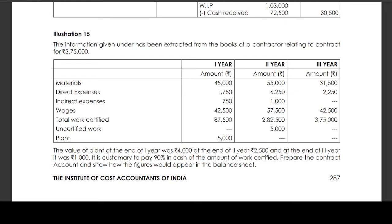For the second year, material is Rs. 55,000, direct expenses Rs. 6,250, indirect expenses Rs. 1,000, wages Rs. 57,500, total work certified is Rs. 2,82,500, and work uncertified Rs. 5,000.